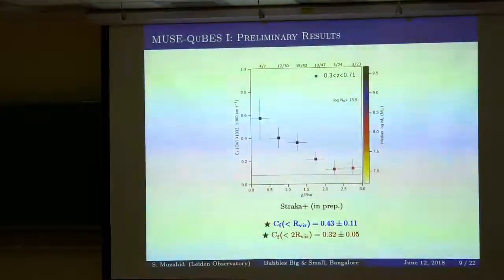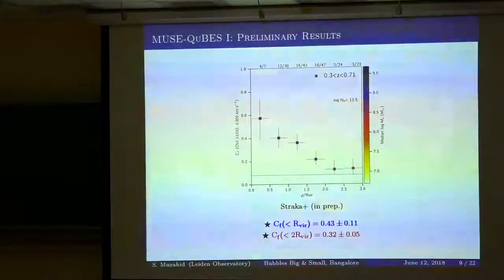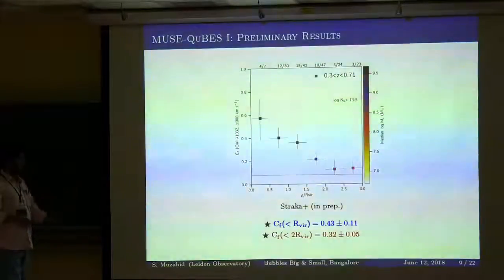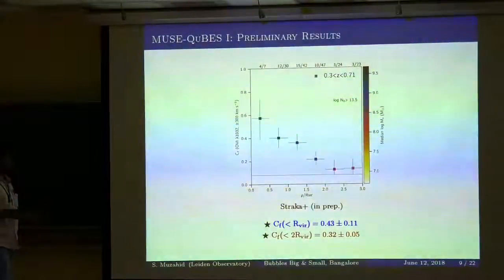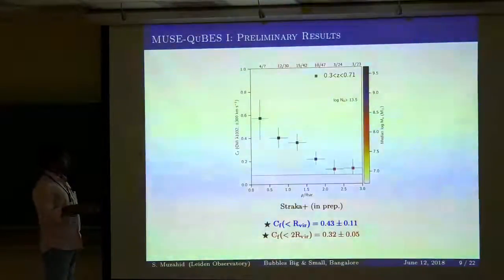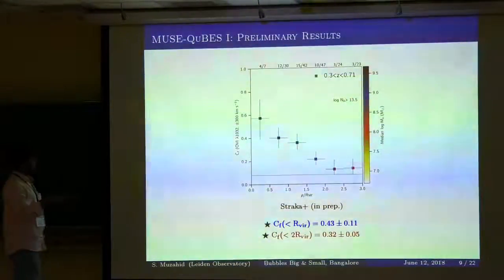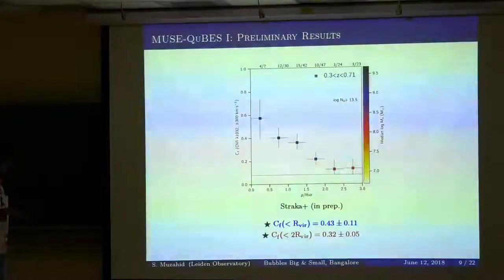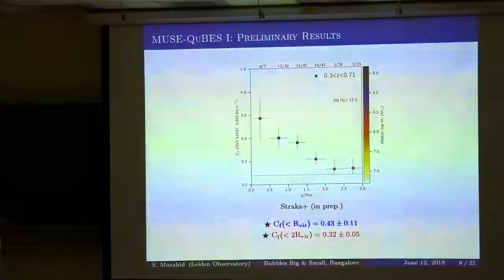These are preliminary results. The x-axis is the normalized impact parameter — impact parameter divided by the virial radius — and the y-axis is the OVI covering fraction, defined as the fraction of sightlines showing OVI absorption above a column density threshold of log N = 13.5. In the innermost bin the OVI covering fraction is roughly 60%; at one virial radius it is ~45%; and at two virial radii it drops to ~30%.